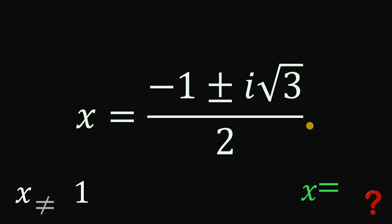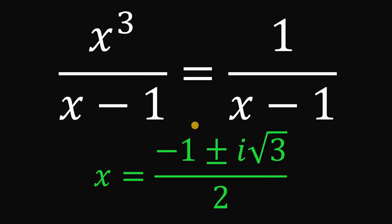Therefore, our answer to this question—what are the values of x that satisfy this equation x cubed over x minus 1 equals 1 over x minus 1—our answer: we have two possible values of x, negative 1 plus or minus i times square root of 3 all over 2. And as always, we are done.